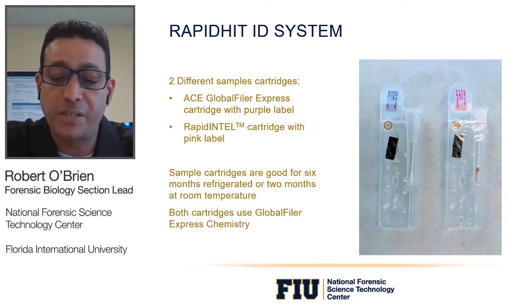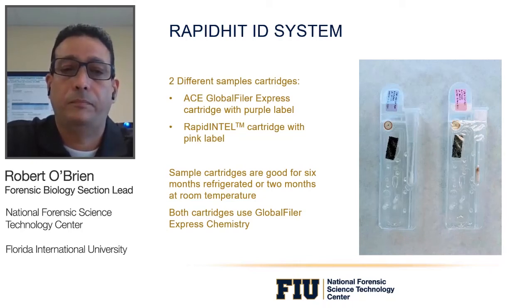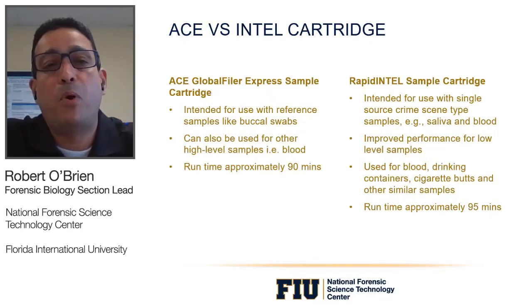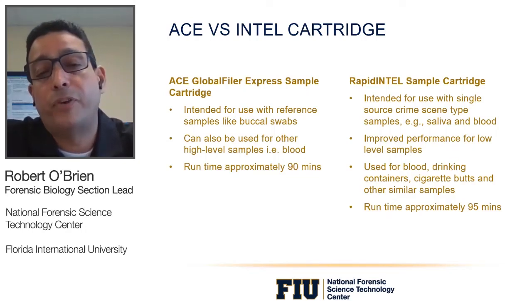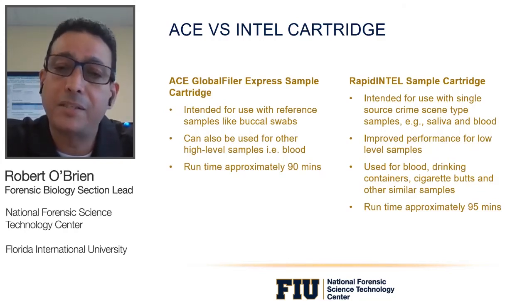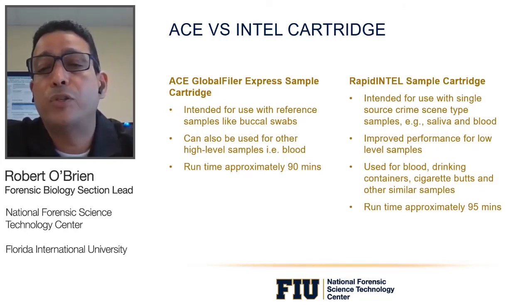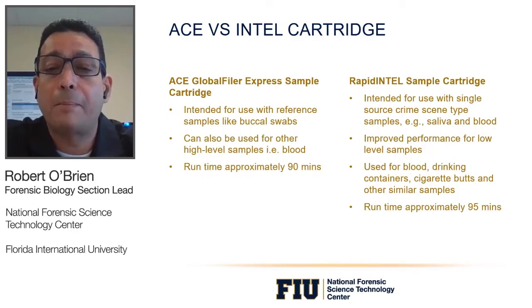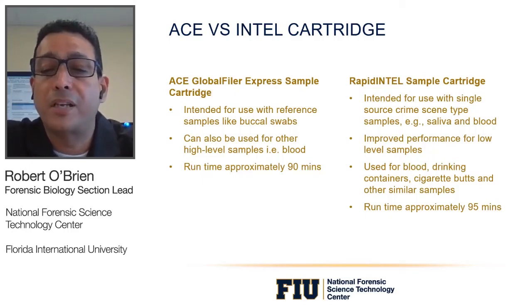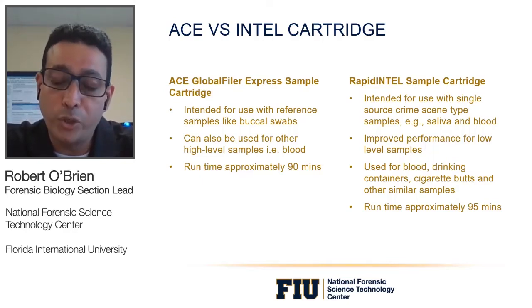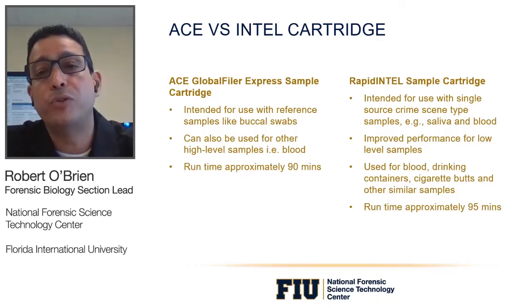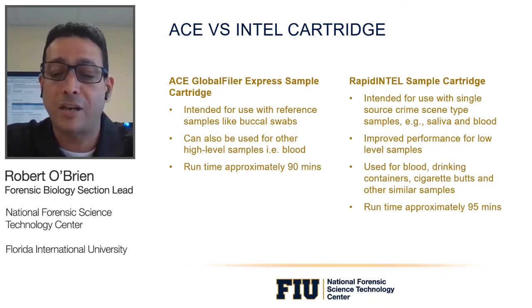There are two different sample cartridges: the ACE Global Filer Express cartridge (purple label) intended for reference samples like buccal swabs and high-level samples like blood, with a runtime of approximately 90 minutes; and the Rapid Intel cartridge (pink label) intended for single-source crime scene samples such as saliva and blood, with improved performance for low-level samples and a runtime of approximately 95 minutes. Both cartridges can be stored up to six months refrigerated or two months at room temperature, and both use Global Filer Express chemistry. The instrument automatically determines the correct runtime based on which cartridge is inserted.